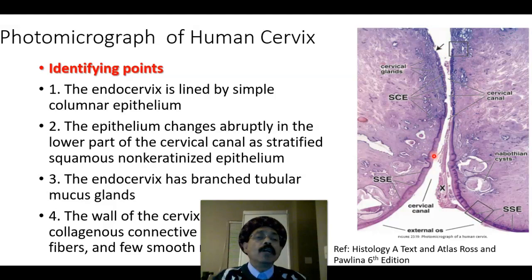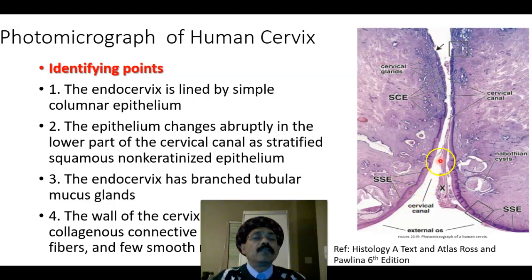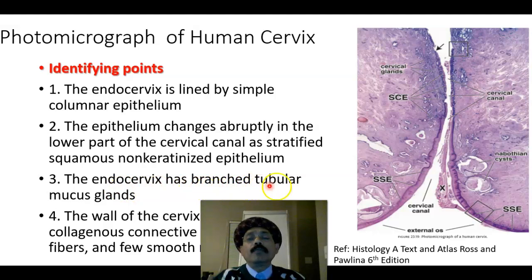In a young lady the junction is a bit lower — the junction between the columnar epithelium and the stratified squamous epithelium of the vagina. This is the ectocervix area; this is the external os, through which it is continuous with the vagina. The vaginal epithelium is stratified squamous non-keratinized epithelium. In this postmenopausal specimen, the junction between the stratified squamous and columnar epithelium is at a higher level than in young ladies.